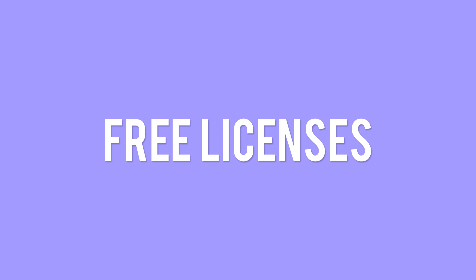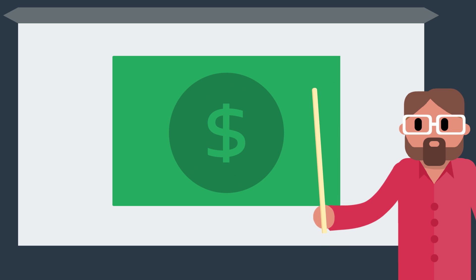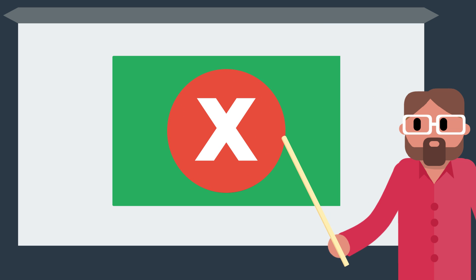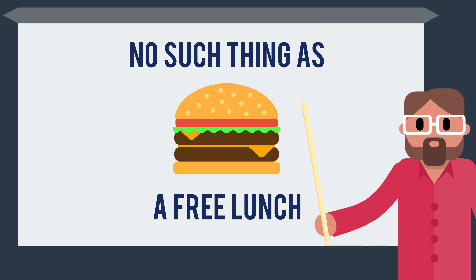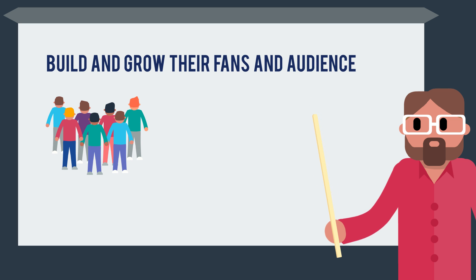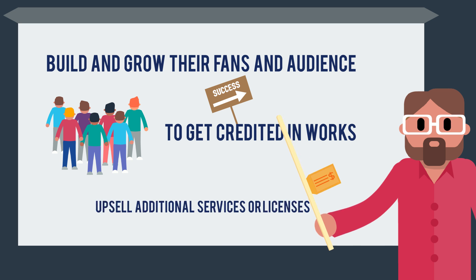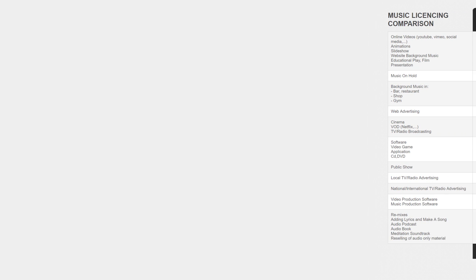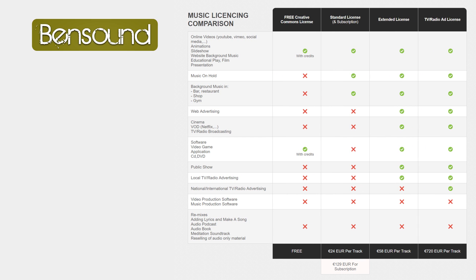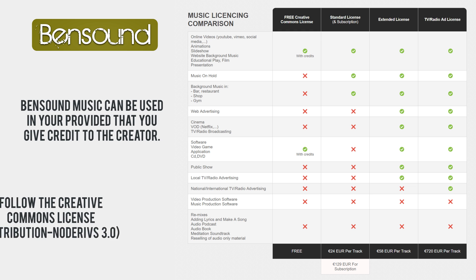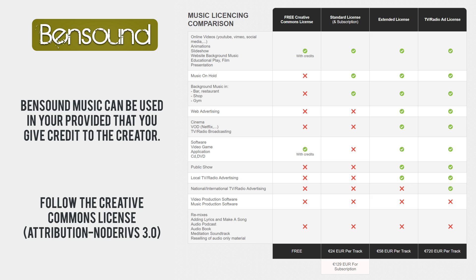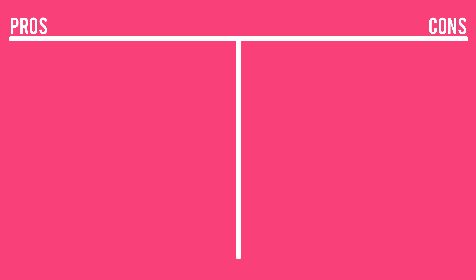Option 2 works in a similar way to the first option, except it won't cost you any money. Option 2 is using free licenses. There are a number of music providers that offer royalty-free music and sound effects licenses for free. Some artists or companies make their music available for free to build and grow their fans and audience, to get credited in work, or to upsell additional services or licenses. One option for music we've found is Bensound. The music on Bensound can be used for your games provided that you give credit and follow the Creative Commons Attribution No Derivatives 3.0 license. There's a ton of selection and the quality is just as good as anything on a paid site. The pros and cons are almost the same as paid royalty-free music — the added pro is that it's free, and the added con is there's less selection.